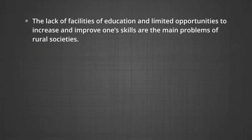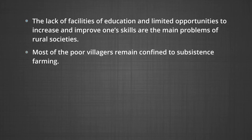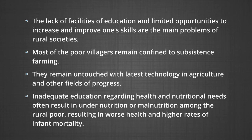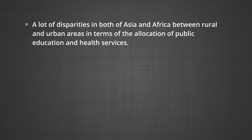Education and social service inadequacies: the lack of facilities for education and limited opportunities to increase and improve one's skills are the main problems of rural societies. Most poor villagers remain confined to subsistence farming and remain untouched by the latest technology in agriculture and other fields. Inadequate education regarding health and nutritional needs often results in undernutrition or malnutrition among the rural poor, resulting in morbidity and higher rates of infant mortality. A lot of disparities exist both in Asia and Africa between rural and urban areas in terms of allocation of public education and health services.